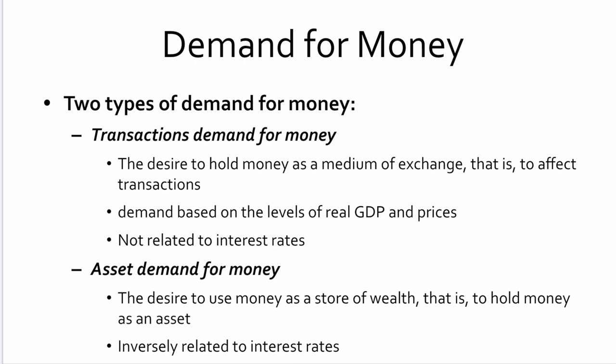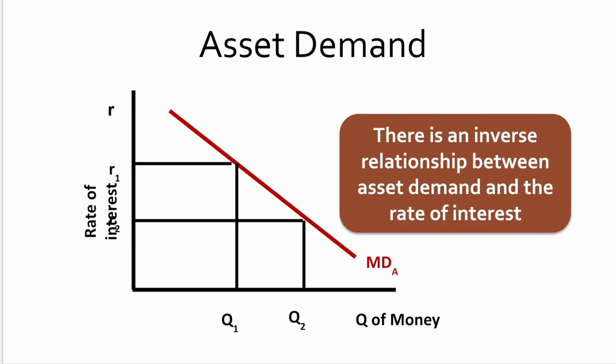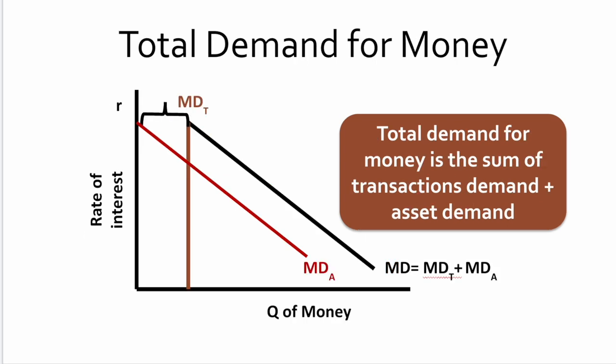The second type of demand for money is called the asset demand for money — the desire to use money as a store of wealth, to hold value as an asset. It is strictly inversely related to interest rates. As interest rates go up, the spending power of money drops. Looking at this graphically, the transactions demand for money is set regardless of the interest rate, whereas the asset demand for money is entirely dependent on the interest rate — like any other product, as the price of money (the interest rate) goes up, the demand for money drops.